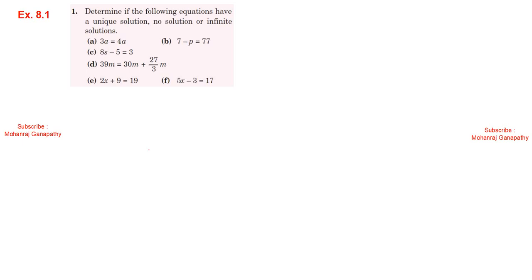Exercise 8.1, Sum number 1: Determine if the following equations have a unique solution, no solution, or infinite solutions. Part a: 3a equals 4a. The a's get cancelled, leaving 3 equals 4. Since 3 is not equal to 4, therefore it has no solution.